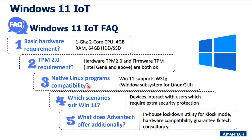If you intend to upgrade from Windows 10 IoT to Windows 11 IoT, you have to meet these requirements. Basic requirements for Windows 11 IoT are a 1 GHz 2-core CPU, 4 GB RAM, and 64 GB storage. It is suitable for devices that interact with users and require extra security protection. We are able to provide in-house lockdown utility for kiosk mode, hardware compatibility guarantee, and technical consultancy.